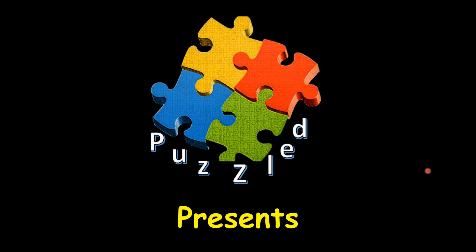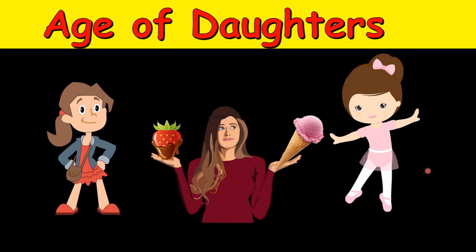Hello friends, we are back with a new puzzle. This puzzle is called the Age of Daughters puzzle. Let's see the question. A person has three daughters and his friend asks him their ages.